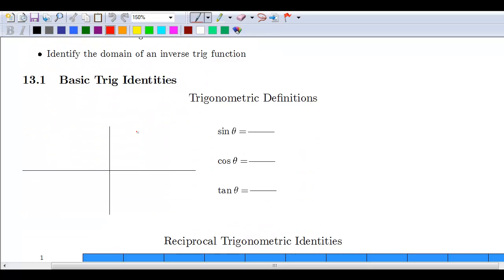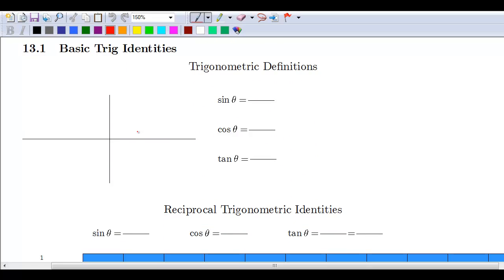The first section we're going to look at is 13.1, which is basic trig identities. This will walk through the basic trig identities as well as using those trig identities to prove other identities. This is getting into what's known as analytic trigonometry.